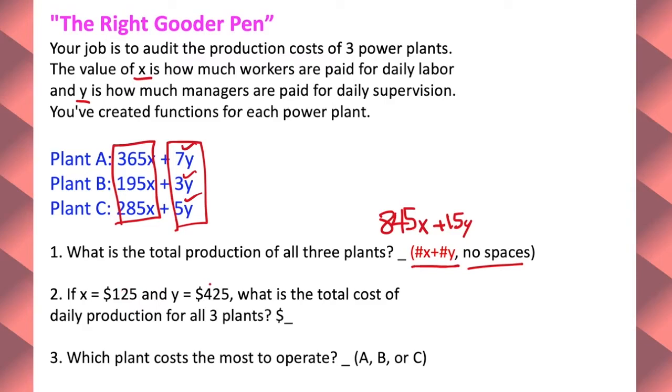I'm guessing, if x equals 125 and y equals 425, what is the total cost of daily production for all three plants? So I'm guessing you would substitute the 125 in for x. Is that what I'm going to do right there? Yes. Nice. Good job, me.